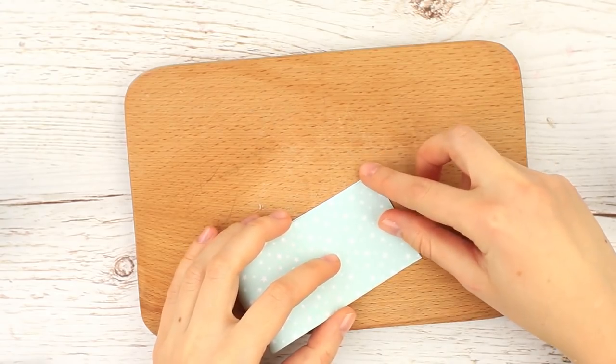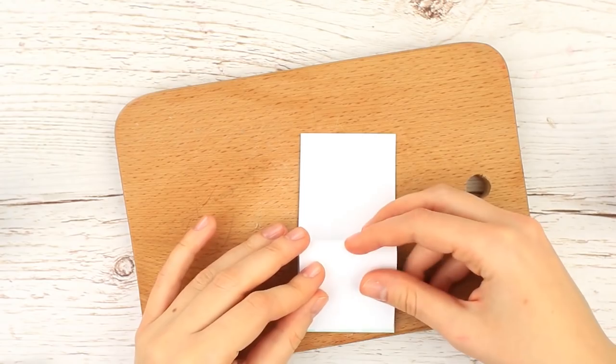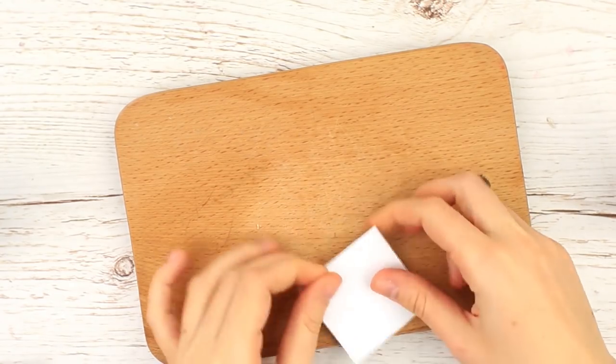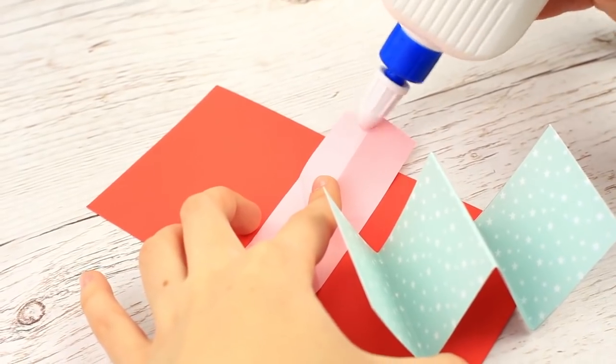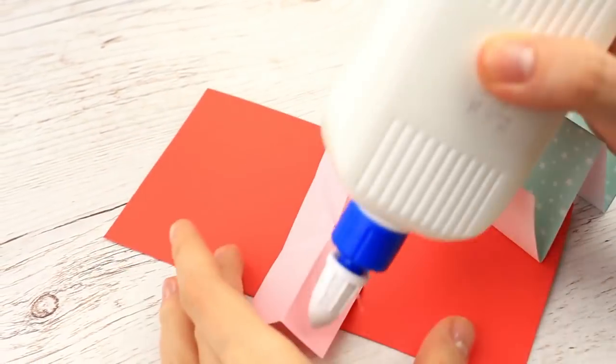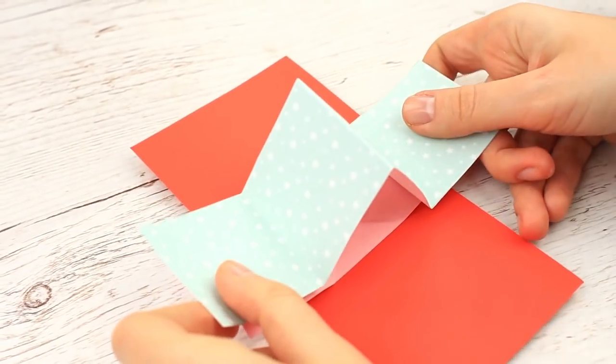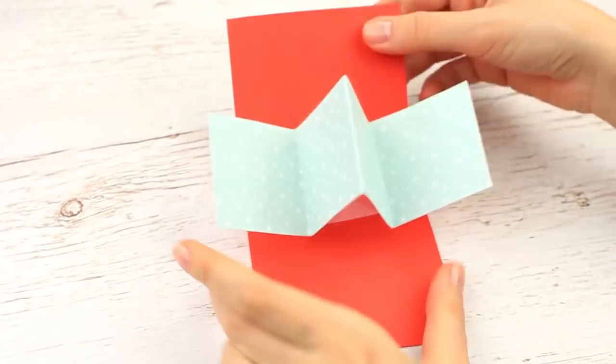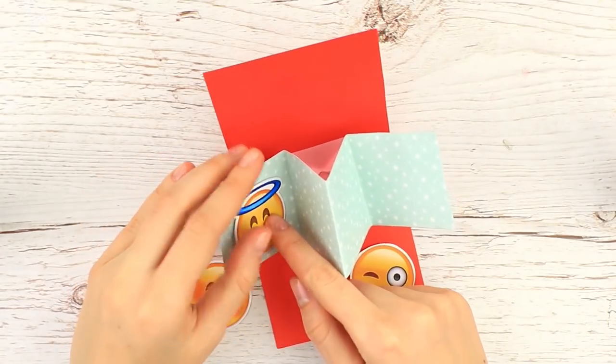Fold the patterned paper strip in half. It should be a bit bigger than the base. Fold the edges to the central crease. Apply the glue to the right top corner of the pink detail and to the left bottom one. Attach the folded element to create a 3D triangle in the center. Thus, the card will be volumetric. Embellish the card with lovely emojis.